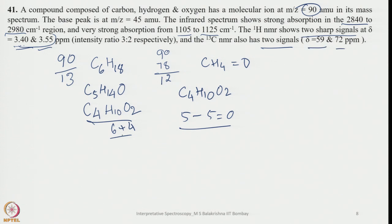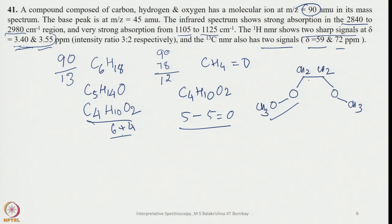Looking at the spectrum, both signals are much more deshielded than a simple CH3 next to carbon, which would appear around 1–2 ppm. Since they are deshielded, they are probably next to an electronegative atom — oxygen. We have a CH2–CH2 unit and two OCH3 groups, both showing singlets in the 3.40–3.55 region. This structure corresponds to mass 90 and is called 1,2-dimethoxyethane.